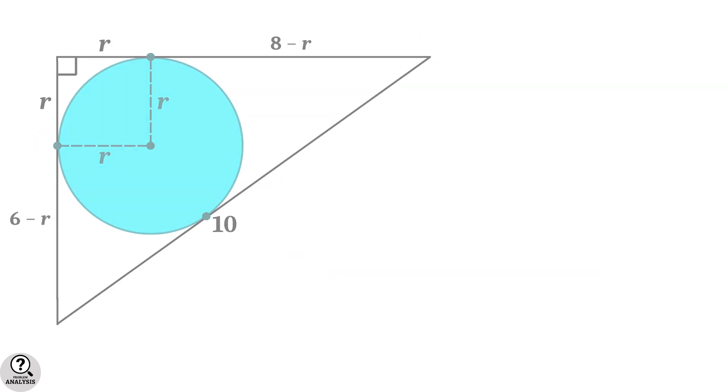Noting this, return to the diagram and look at these two lines. Since they are tangents drawn from the same point, they are equal in length: 6 - R each. Now check these two sides. They are also tangents from the same point, so by the same property, they are equal: 8 - R each.